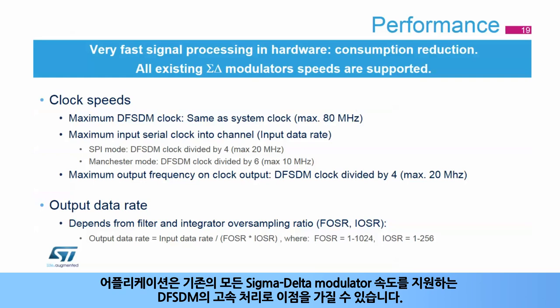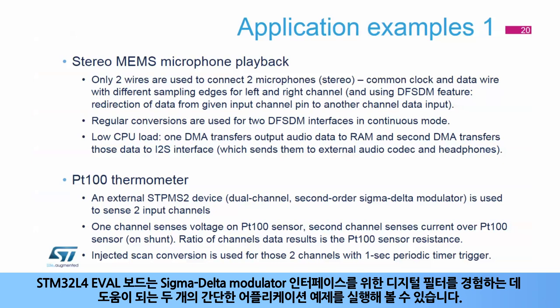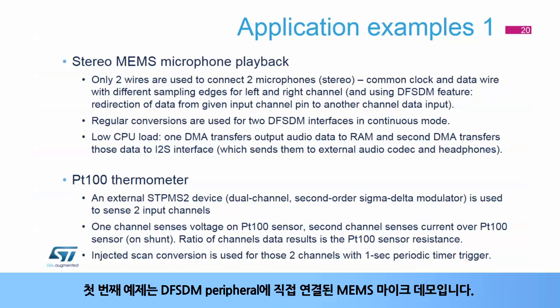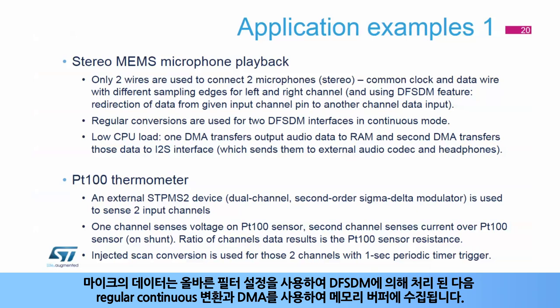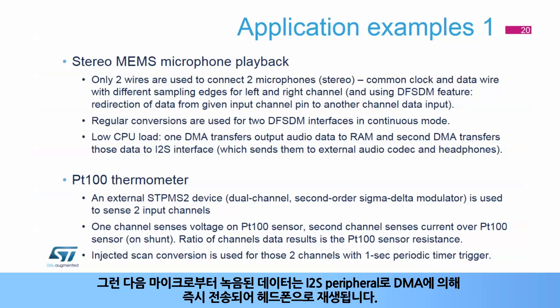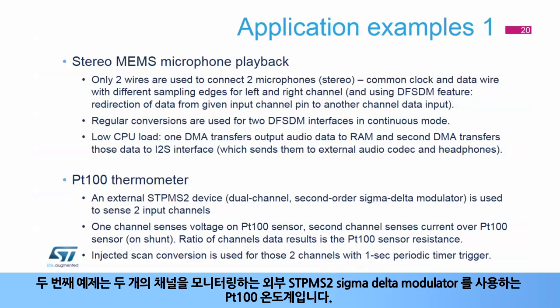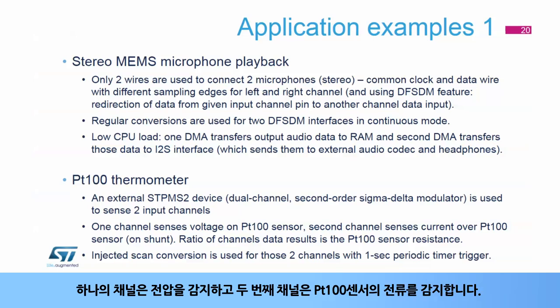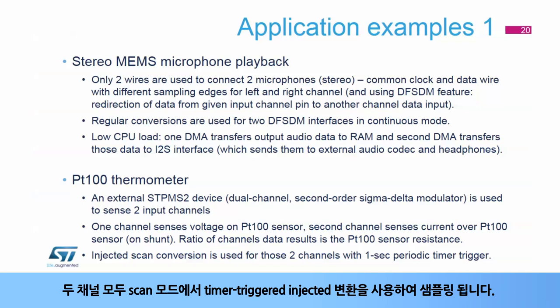Applications benefit from DF-SDM high-speed processing, which supports all existing Sigma-Delta modulator speeds. The STM32L4 evaluation board can be used to run two simple application examples. The first example demonstrates a MEMS microphone directly connected to the DF-SDM peripheral. Data from the microphone are processed by DF-SDM with correct filter settings and collected into a memory buffer using regular continuous conversions and DMA. Recorded data are then immediately sent by DMA from this buffer to the I2S peripheral and played by headphones.